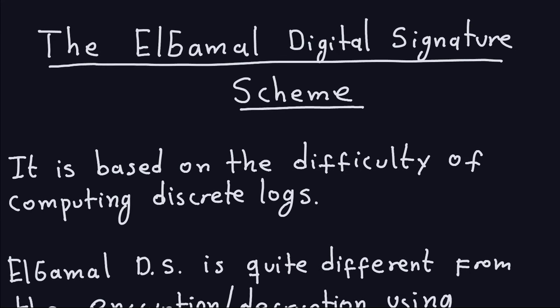Hello and welcome again. In this video we'll talk about the ElGamal Digital Signature Scheme, which is based on many of the things we did for the ElGamal encryption. One of them is that it's based on the difficulty of computing discrete logarithms, similar to the ElGamal encryption. The security of the ElGamal, at least the schoolbook version, is based on whether or not you can compute discrete logarithms efficiently, and up to now there is no efficient algorithm that can do that.